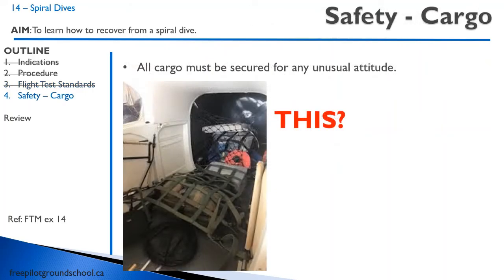Let's talk about cargo. We discussed this with spins, but with steep turns and unusual attitudes it's really important. Cargo has to be secured for any unusual attitude. Here's a great example of how cargo should look in the back of a Cessna 172 — notice the cargo nets. These are all decent cargo nets; nothing is going to fly out and hit anybody. This is the way it should be done.